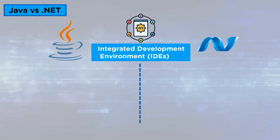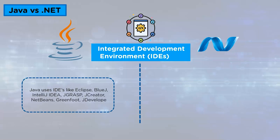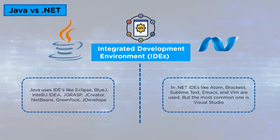Integrated Development Environment: Java uses IDEs like Eclipse, BlueJ, IntelliJ IDEA, JGRASP, JCreator, NetBeans, Greenfoot, and JDeveloper. In .NET, IDEs like Atom, Brackets, Sublime Text, ICMAS, and VIM are used, but the most common one is Visual Studio.